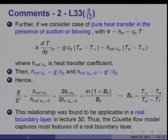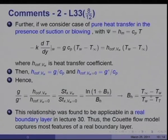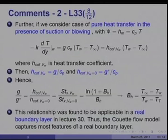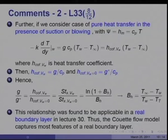Thus g/G-star equals h(v_w)/h(v_w=0) equals St_x(v_w)/St_x(v_w=0) equals ln(1 plus B_h)/B_h, where B_h equals (T_infinity minus T_w)/(T_w minus T_t). This relation was found to be applicable in real boundary layer flow as shown in lecture 30. Therefore, the Couette flow model captures the features of a real boundary layer flow. The Couette flow model recovers Stefan flow model features when gamma_t equals zero, and also captures boundary layer flow features when the same species is sucked or blown.